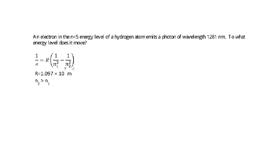So we have an electron in the n equals 5 energy level emits a photon with a wavelength of 1281 nanometers. To what energy level does it move?